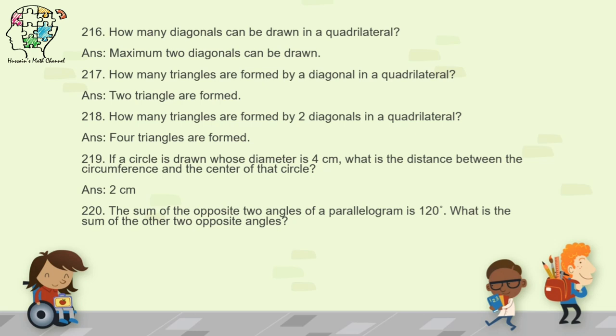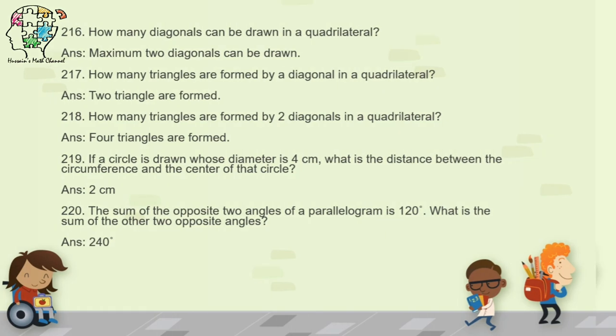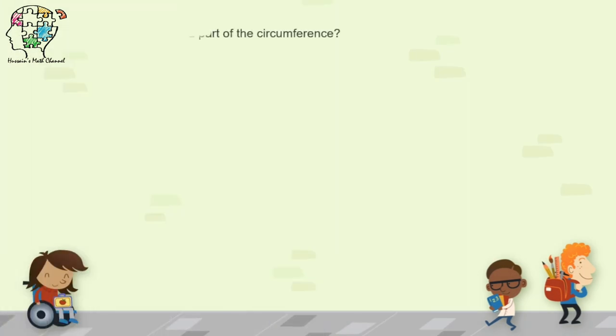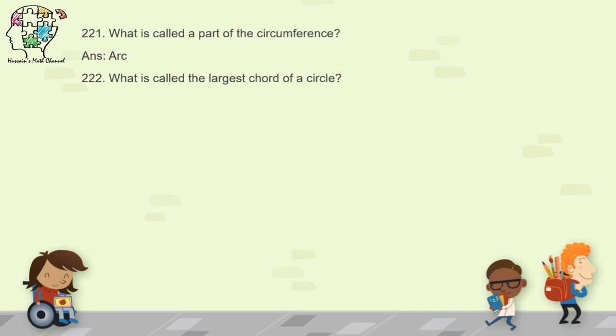Question 220: the sum of two opposite angles of a parallelogram is 120 degrees — what is the sum of the other two opposite angles? Subtract 120 from 360 to get 240 degrees. Question 221: what is called a part of a circumference? Any part of a circumference is called an arc. Question 222: what is the largest chord of a circle? The largest chord is the diameter.